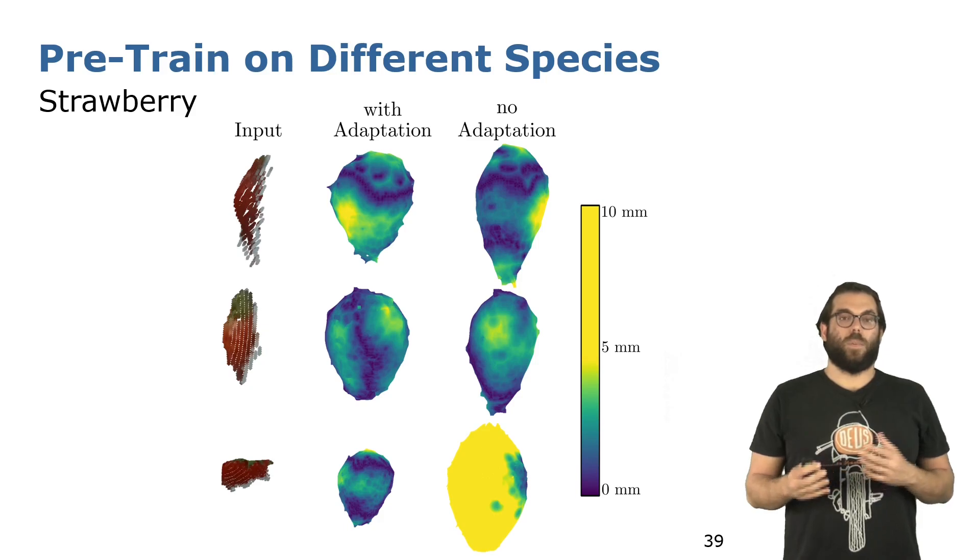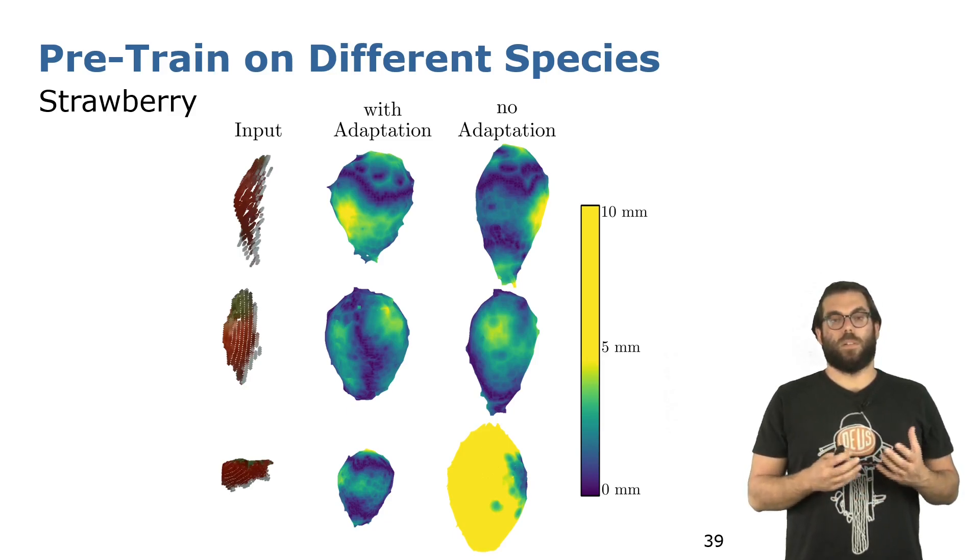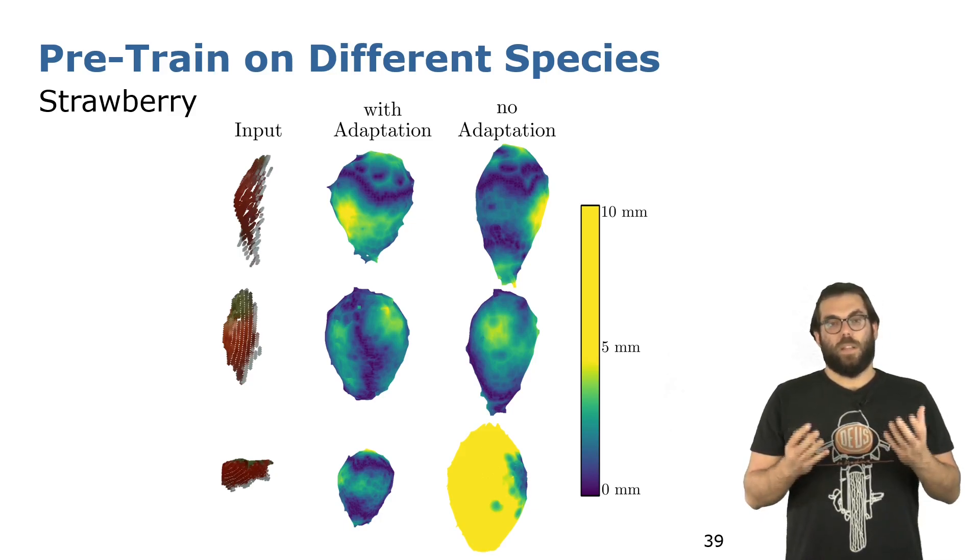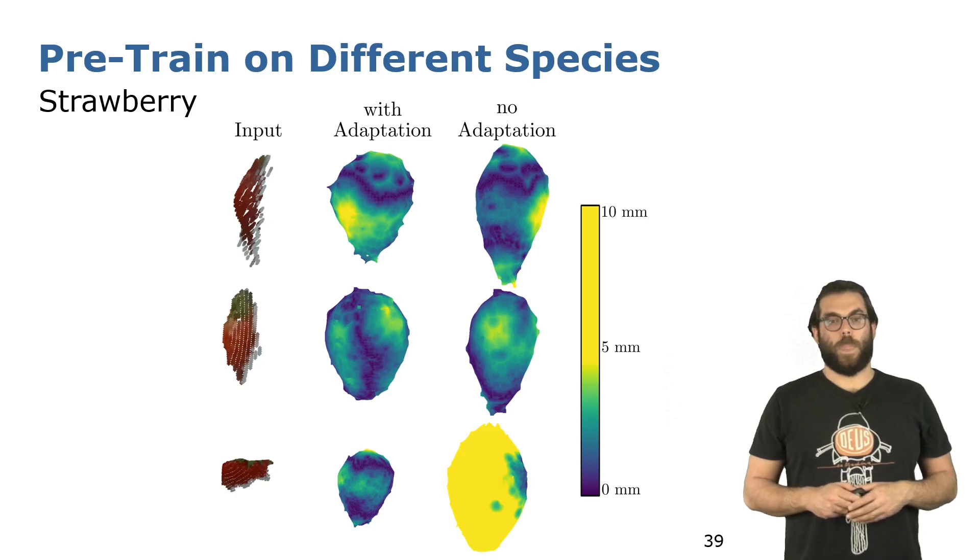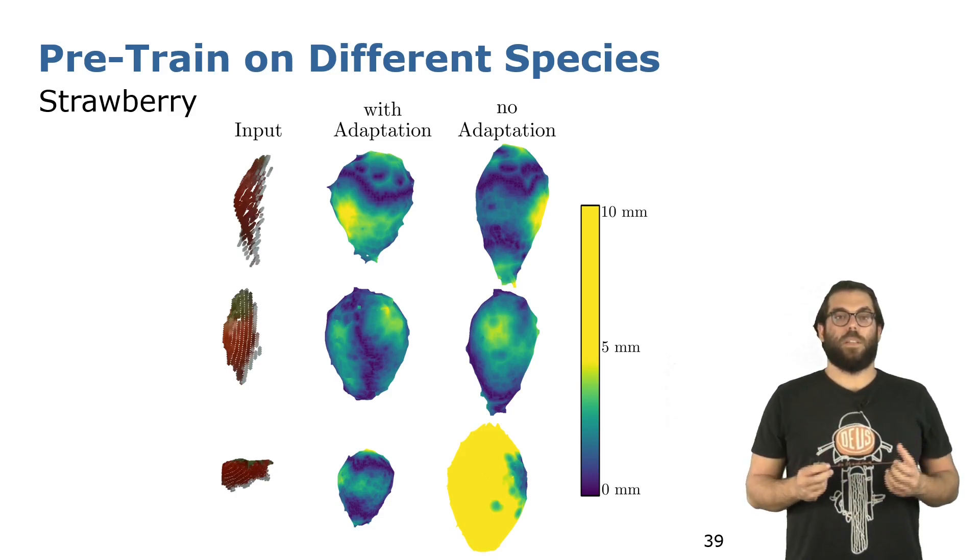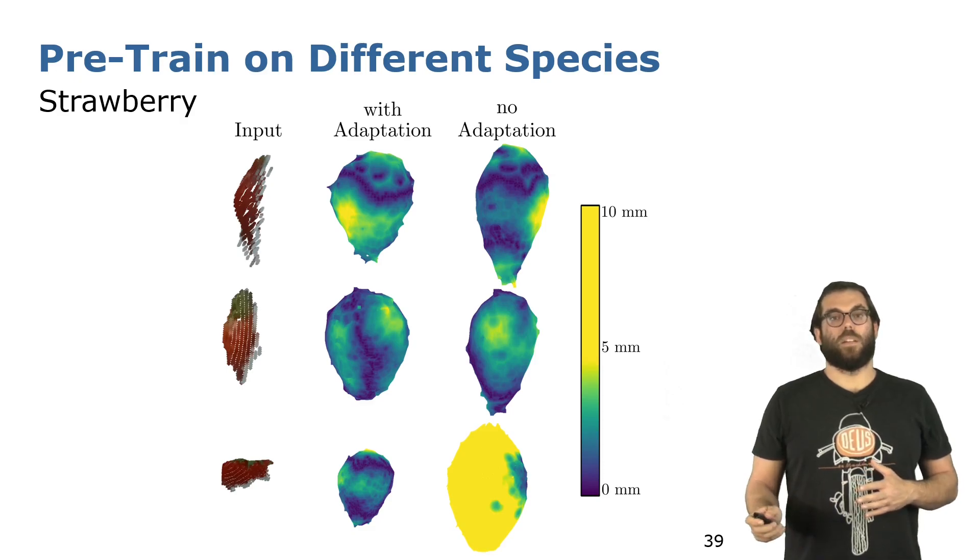Again, here we show an overview, also a clear depiction of where the errors are in our predicted 3D models. On the left you see the input strawberry fruits, and then on the right you see the output of our model with and without the adaptation. This pre-training was done on the other species, meaning that in this case we pre-trained with the sweet pepper data. By adapting the pre-trained model we can obtain shapes that look like strawberry, and this is especially interesting on the bottom case here, when the input was pretty sparse and partial.